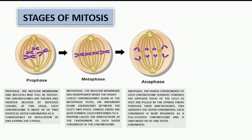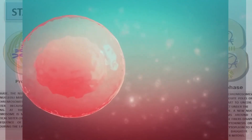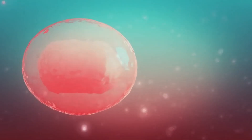Each chromatid is now regarded as a full-fledged chromosome made up of one sister chromatid. The fourth stage is telophase. The chromosomes are now at the opposite poles of the spindle. They start to uncoil and become indistinct under the light microscope. A new nuclear membrane forms around them while the spindle fibers disappear. There is also cytokinesis, or the division of the cytoplasm, to form two separate daughter cells immediately after mitosis.